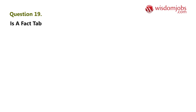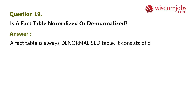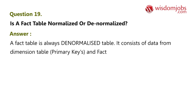Question 19: Is a fact table normalized or denormalized? Answer: A fact table is always a denormalized table. It consists of primary keys from dimension tables as foreign keys, along with measures.